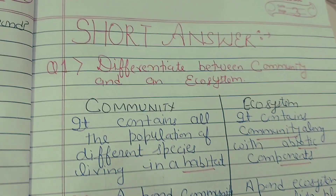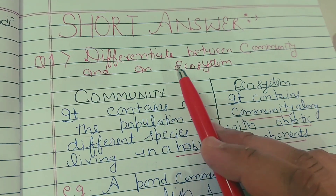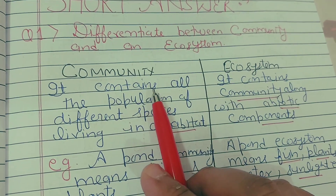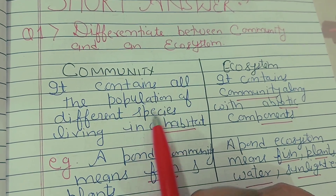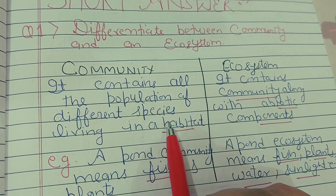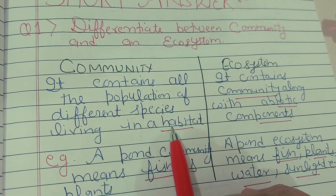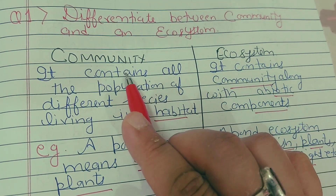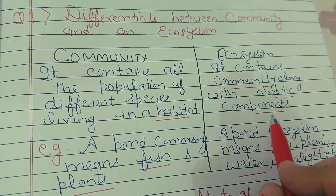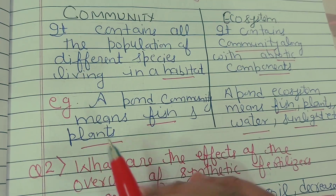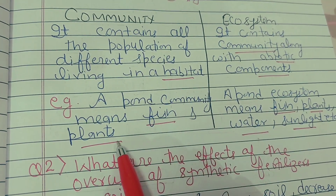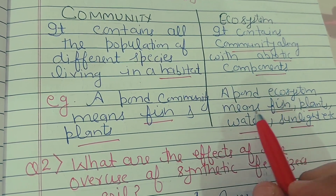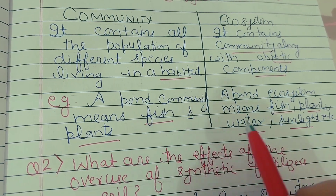Now come to the short answer questions. First: differentiate between community and ecosystem. A community includes the population of living beings of different species living in the same habitat. An ecosystem contains a community along with abiotic components. For example, a pond community means fish and plants, while the pond ecosystem means fish and plants along with water and sunlight — living plus non-living.